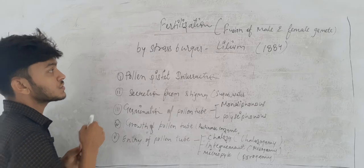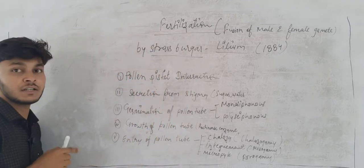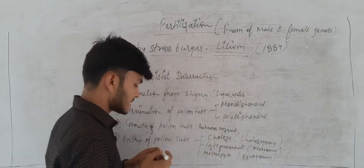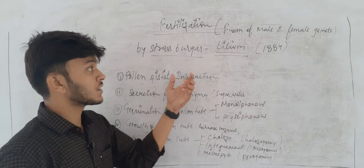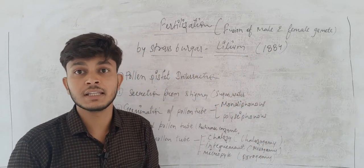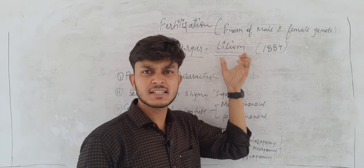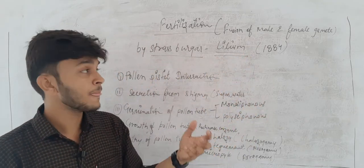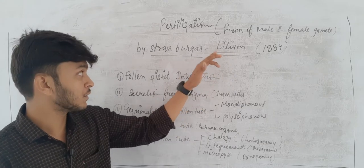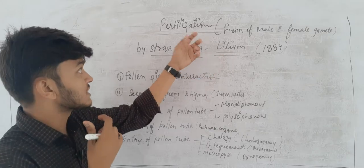Fertilization was discovered by Strasburger. The plant used in this discovery is Lilium, which is related to garlic and onion. This was discovered by Strasburger in 1884.